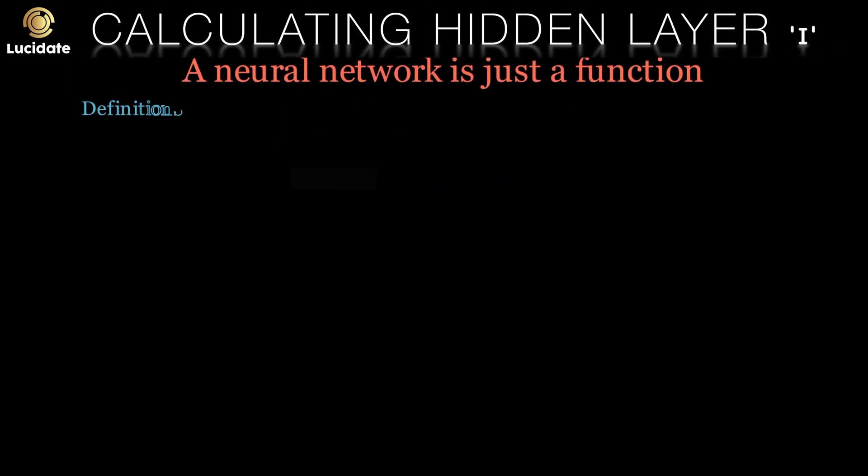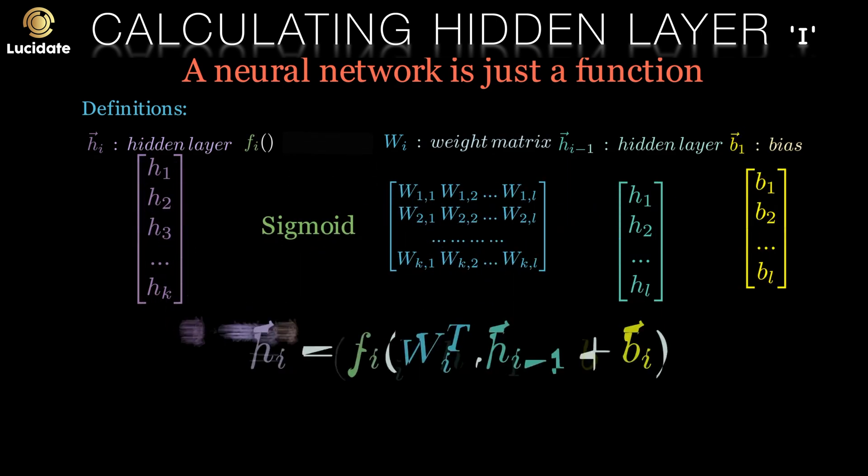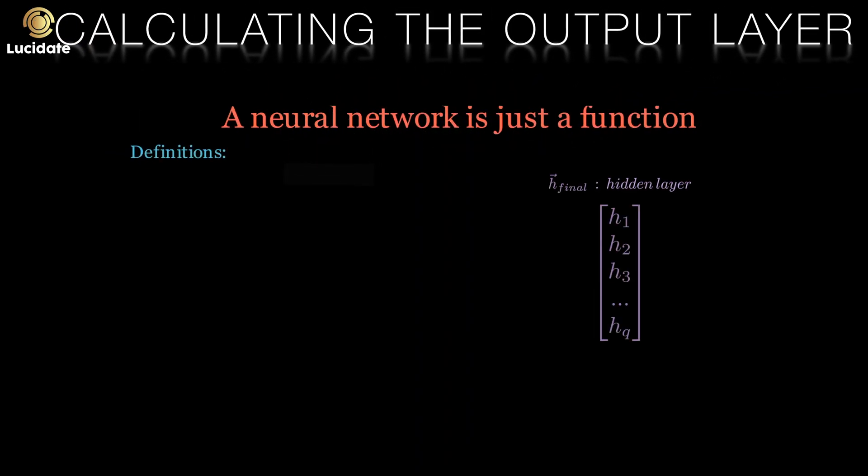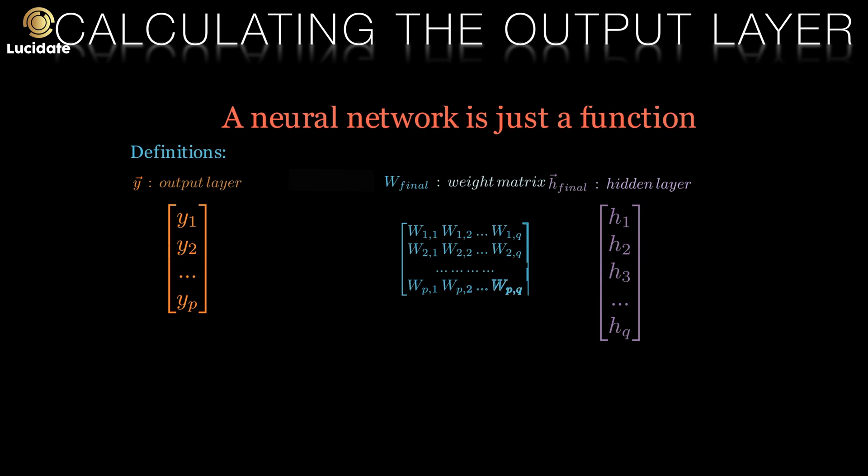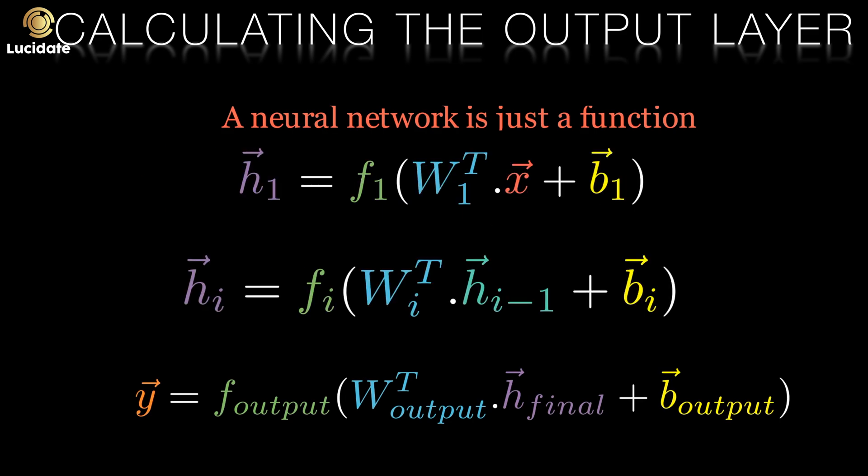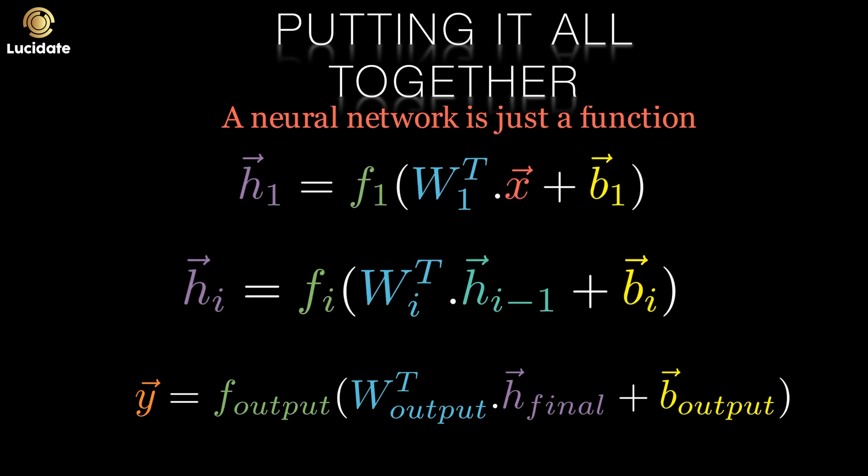If we want to write the function that generates the activations in the ith hidden layer then we can similarly write it as you see on your screen until we reach the output layer when our output vector will be as you see here. The subscript final denotes the final hidden layer. Written this way we have a recursive set of formulae that generate our output from our input. You can see how you can get to the output y from the input x.